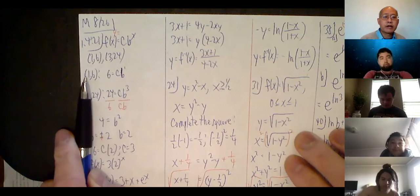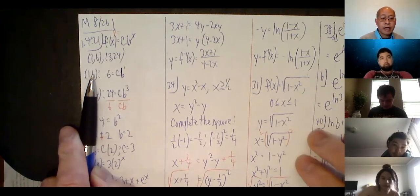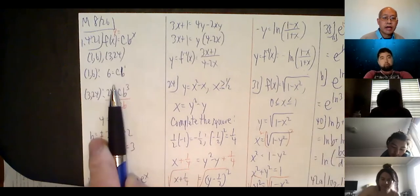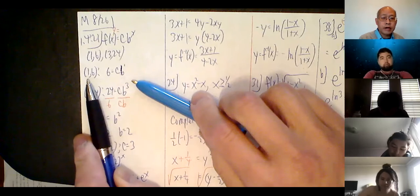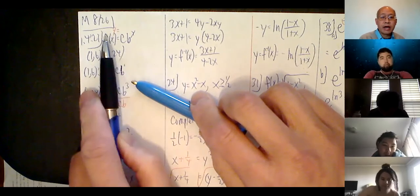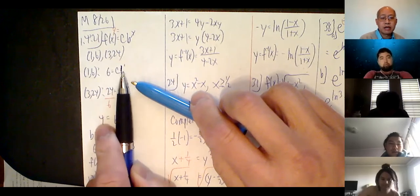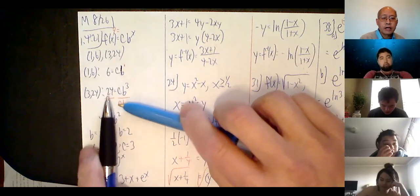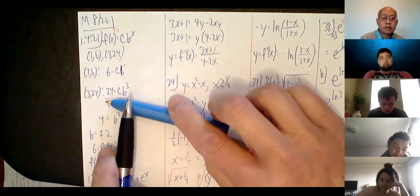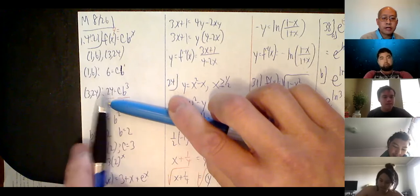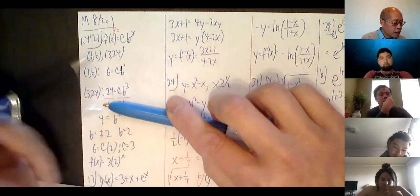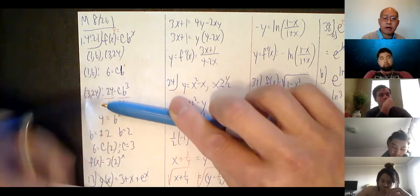Here's all you do. For the point (1, 6), I plug in 1 for x and 6 for y. F of x is equal to y, so 1 goes in for x and 6 goes in for y. B to the x is b to the 1, which is just b. So 6 equals C times b. Do the same thing for (3, 24): put 3 in for x, 24 in for y, so it looks like: 24 equals C times b cubed. So I have two equations and two unknowns, and I can solve that by a variety of methods.